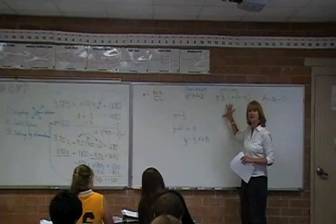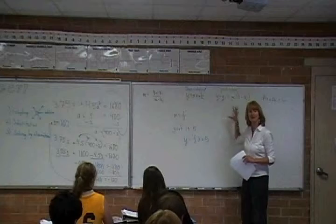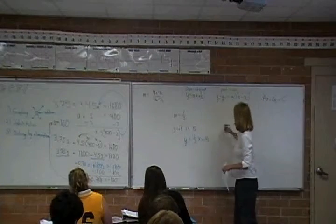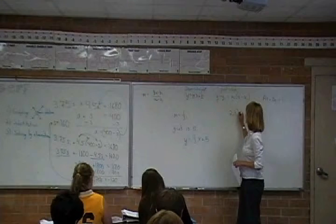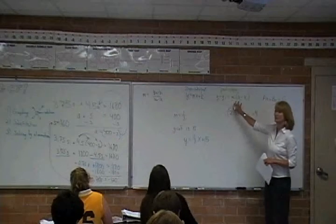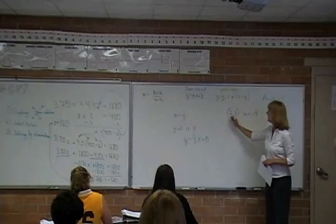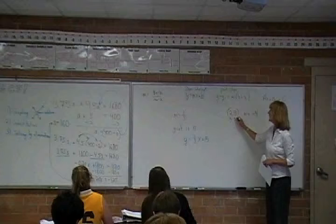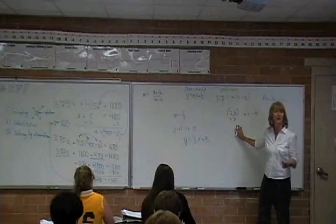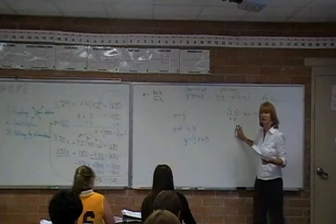Point-slope form. This is what you use when you have a slope and a point, not the y-intercept. But if you're given something like 2, 3 and the fact that m equals negative 4, this is what you use. You are given a point, x1, y1. That's why the subscripts are there. Anything with a subscript, it's going to be a number replacing it.